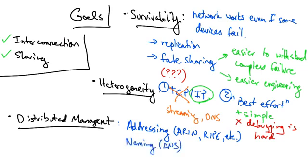DNS allows each independent organization to manage its own names, and BGP allows each independently operated network to configure its own routing policy. This means that no single entity needs to be in charge, and thus allows for organic growth and stable management.